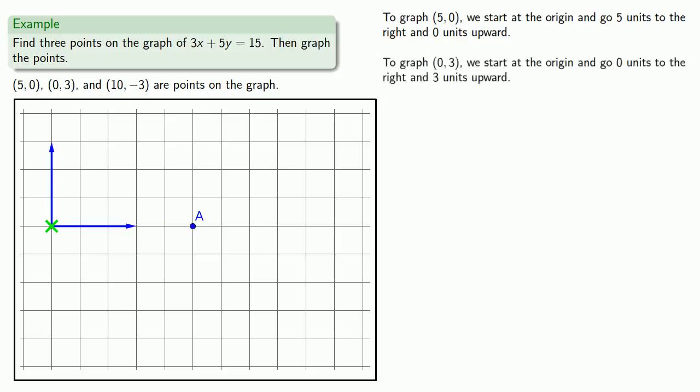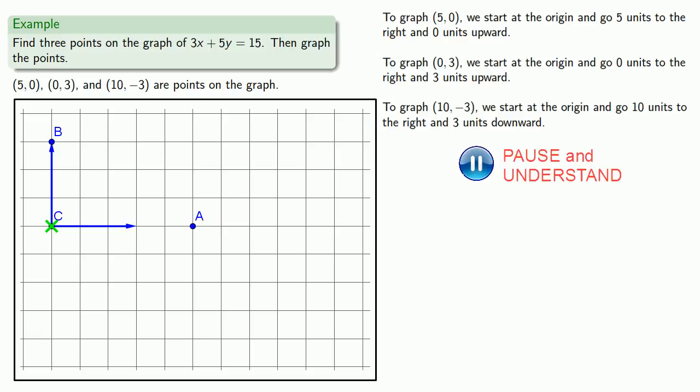To graph (0, 3), we'll start at the origin and go 0 units to the right and then 3 units upward. Finally, to graph (10, -3), we'll start at the origin and go 10 units to the right and 3 units downward. That gives us the graph of these three points.